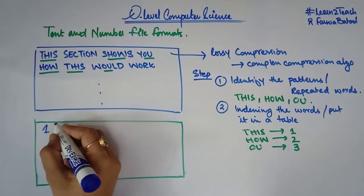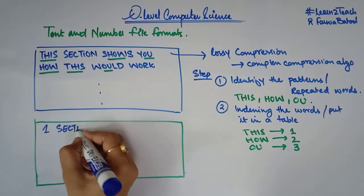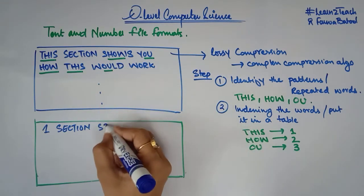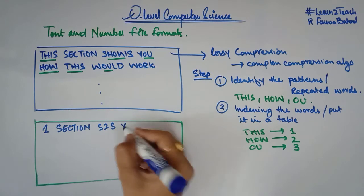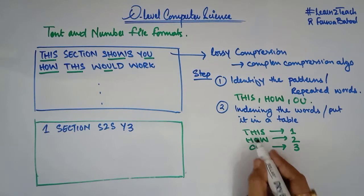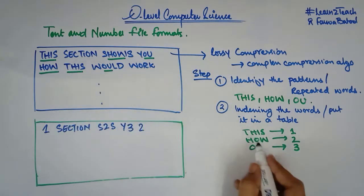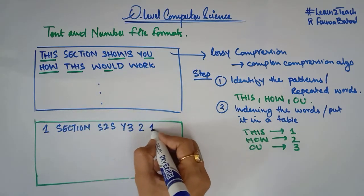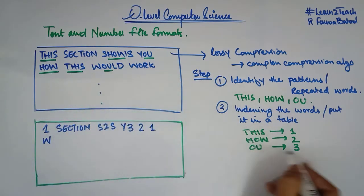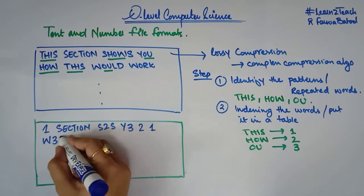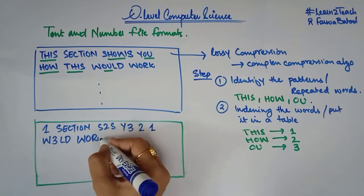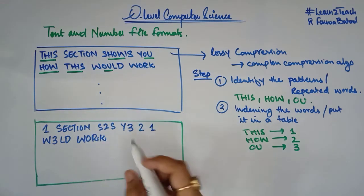The repeated words or patterns are replaced with their index numbers. So 'this' is replaced by 1, 'how' is replaced by 2, 'shou' — the 'ou' part — is replaced by 3, and 'would' — the 'ou' part — is also replaced by 3. This is how the compressed file looks.